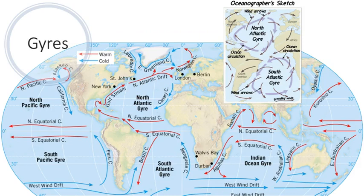These gyres move clockwise in the northern hemisphere and counterclockwise in the southern hemisphere. This is due to the Coriolis effect, a phenomenon which causes fluids like ocean water and air to be deflected to the right or deflected to the left in the northern and southern hemispheres, respectively.